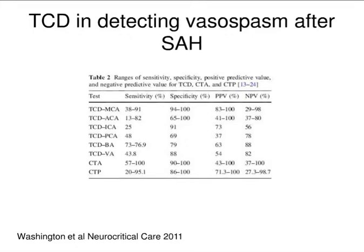There are a number of articles, such as this review in the Neurocritical Care Journal in 2011, that look at the positive predictive value, negative predictive value, sensitivity, and specificity of transcranial Doppler in detecting vasospasm after subarachnoid hemorrhage. The data are pretty reasonable. Using strict criteria, you can get good sensitivity and specificity using that technique on the middle cerebral artery, though the numbers go down as you get to other kinds of blood vessels. It compares very favorably with imaging techniques such as CT angiography or CT perfusion.